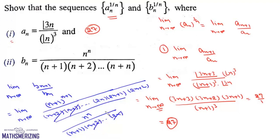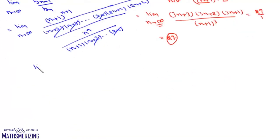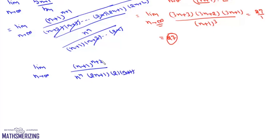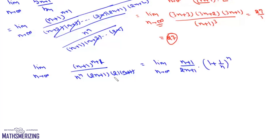Now (n+2)(n+3)...2n will cancel. We can cancel (n+1) once, so we get (n+1)^(n+1). We can also write this as the limit as n tends to infinity of (n+1)/(2n+1) into (1 + 1/n)^n, and we also have a factor of 2. Taking the limit, this part gives simply 1/4, and then (1 + 1/n)^n is a standard limit whose value is e. So the limit of the sequence is simply e/4.